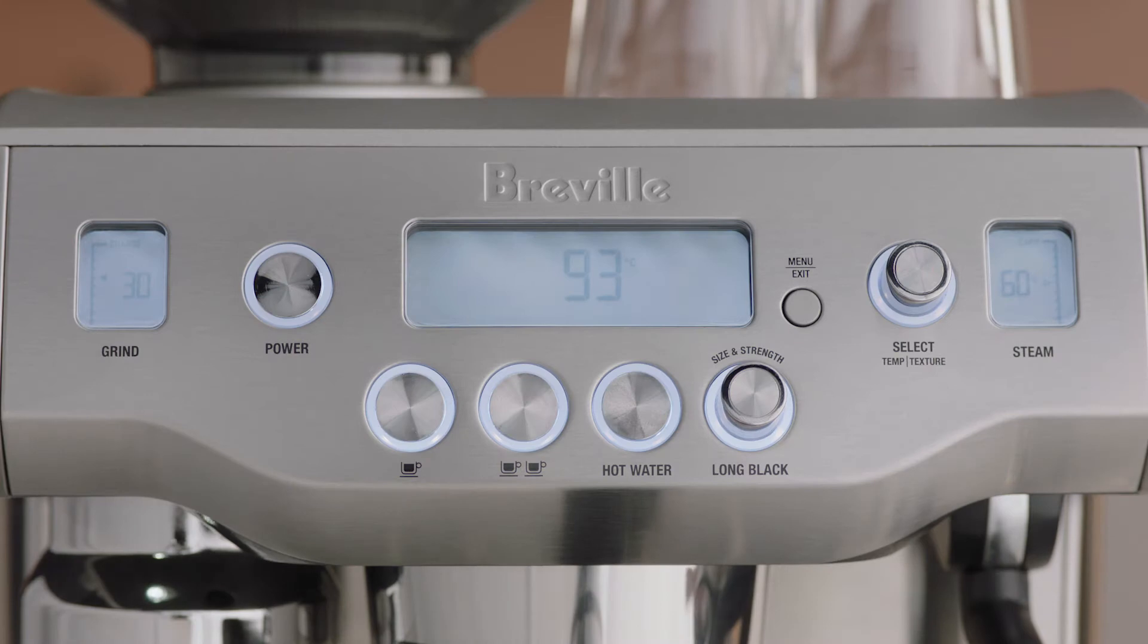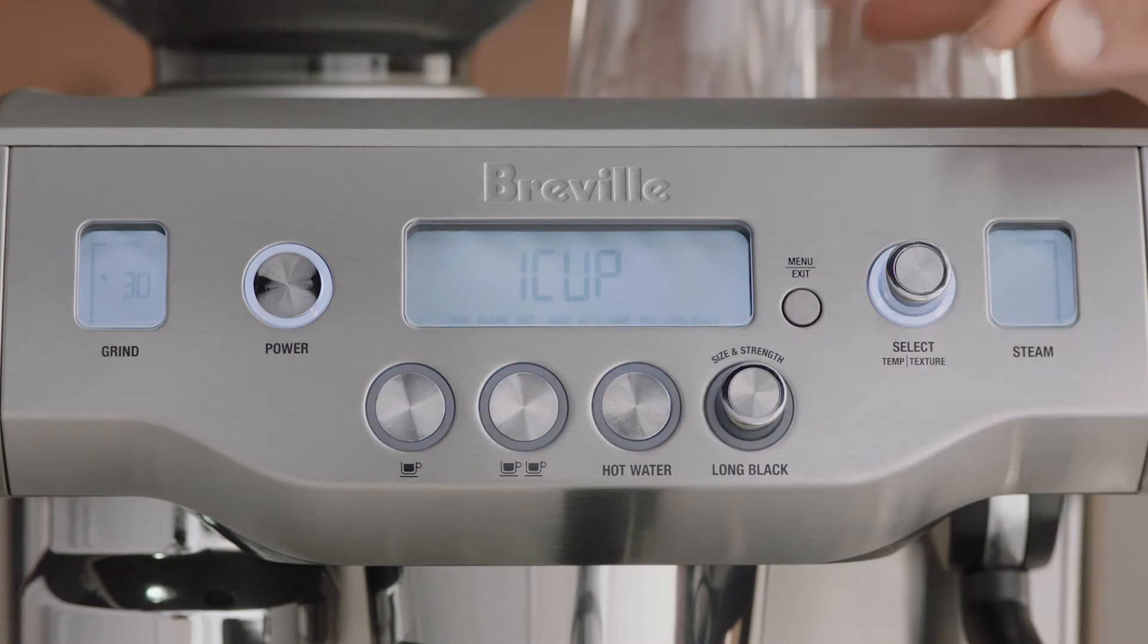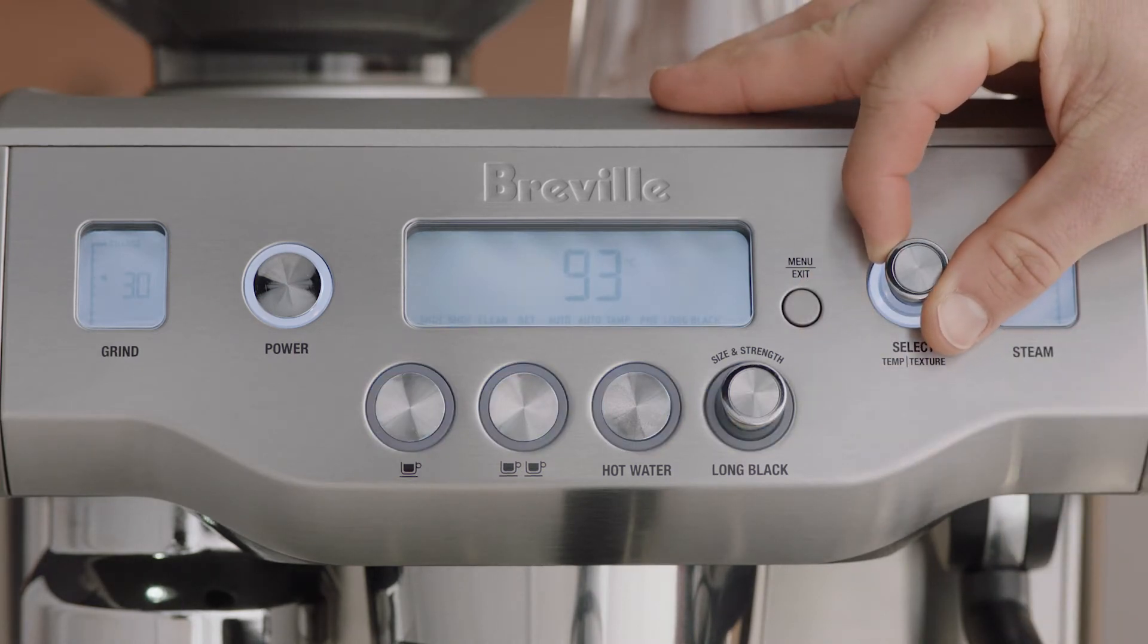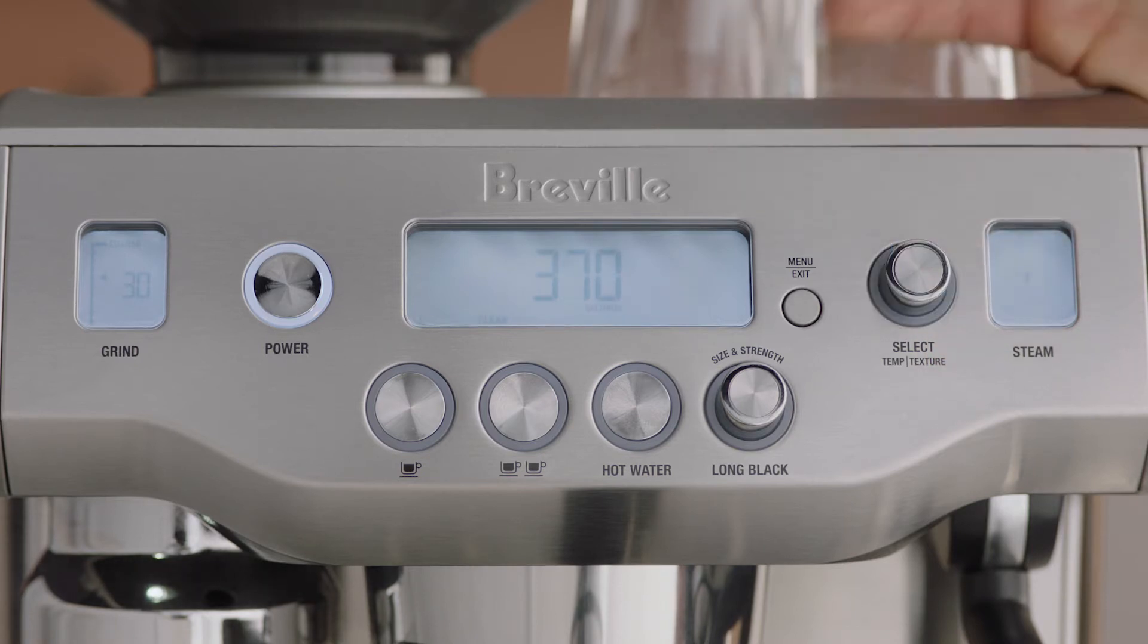Press the menu button and rotate the select dial until clean cycle and push are displayed on the LCD. Press the select dial to start the cleaning cycle.